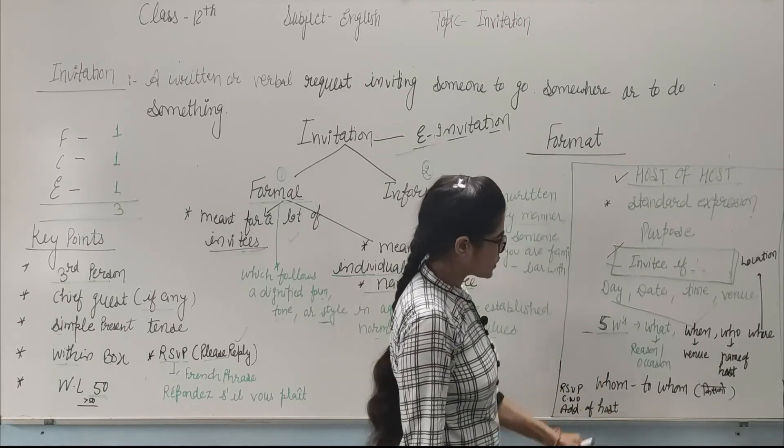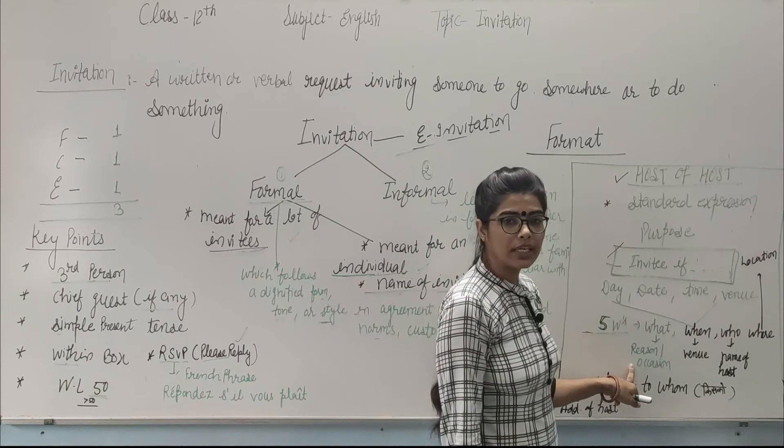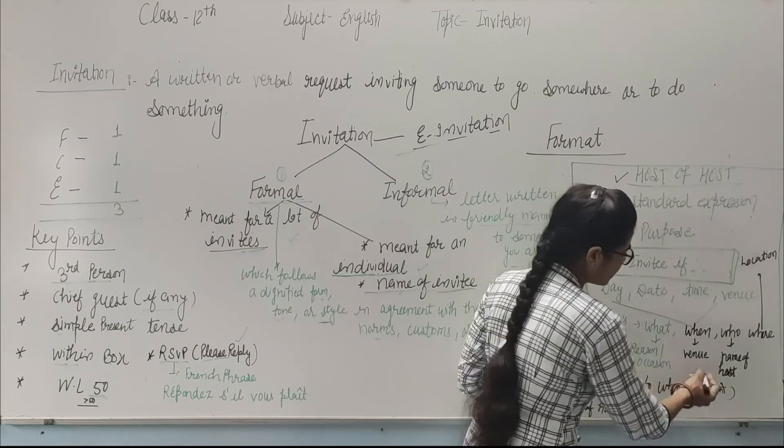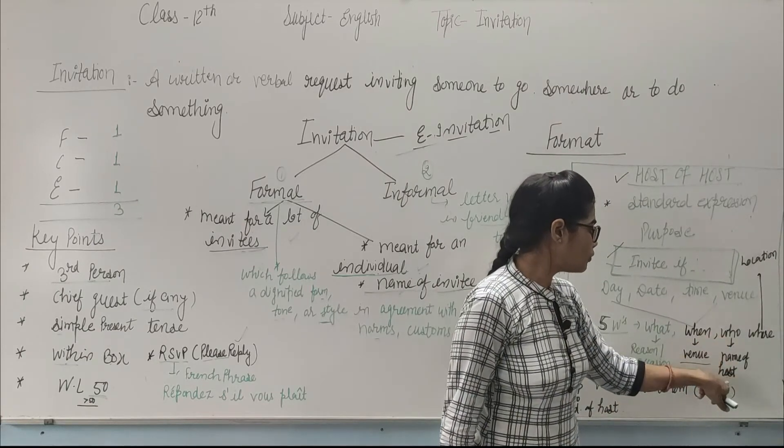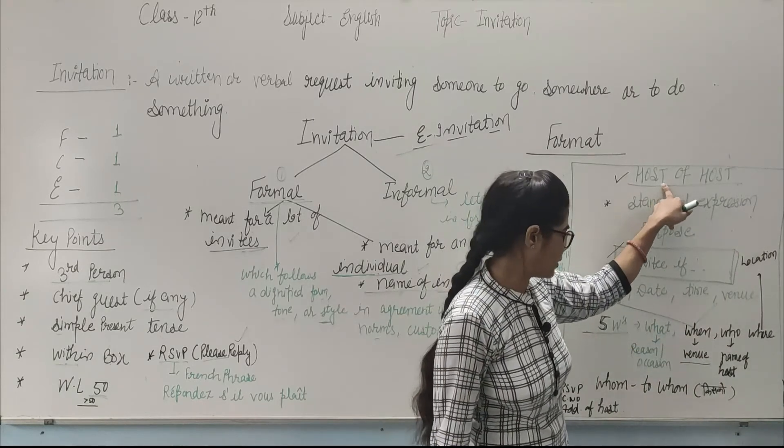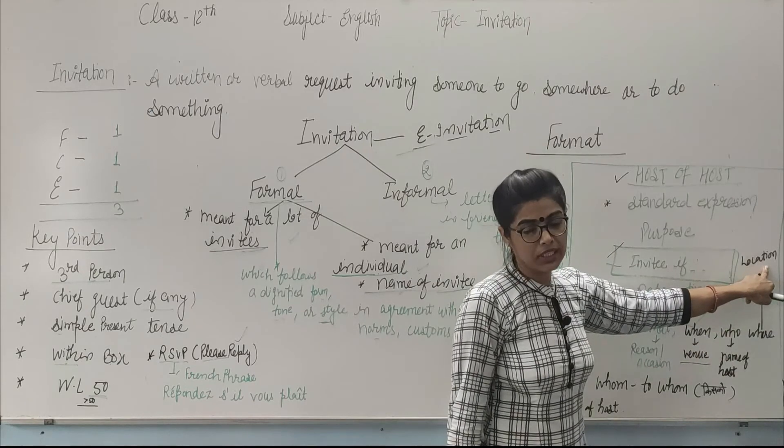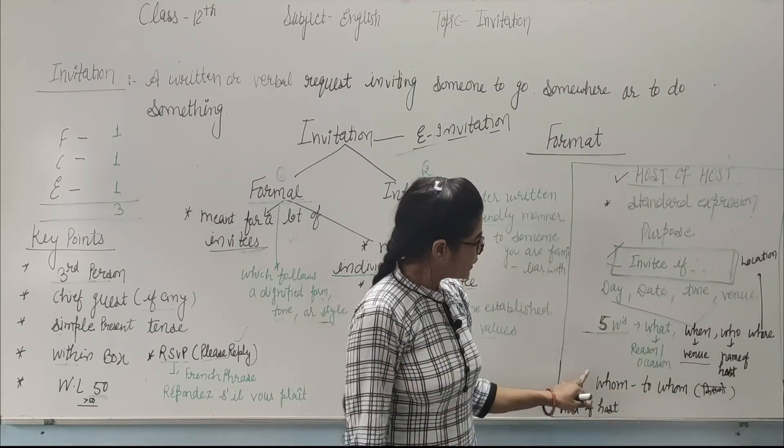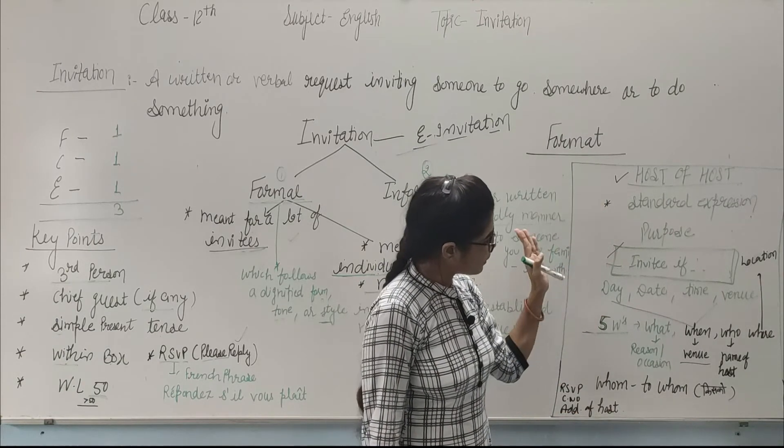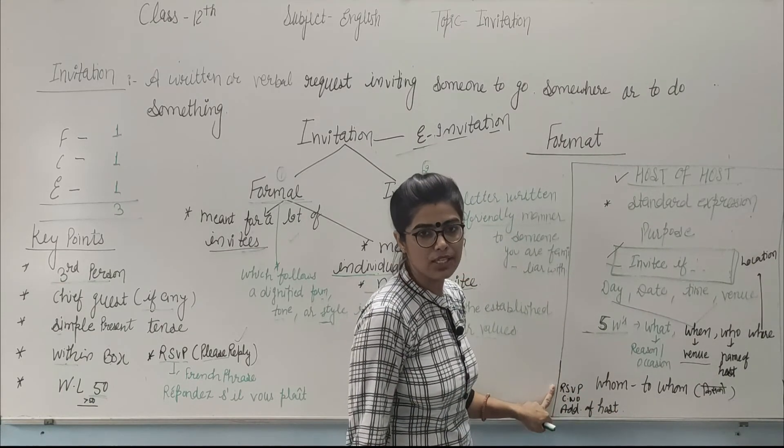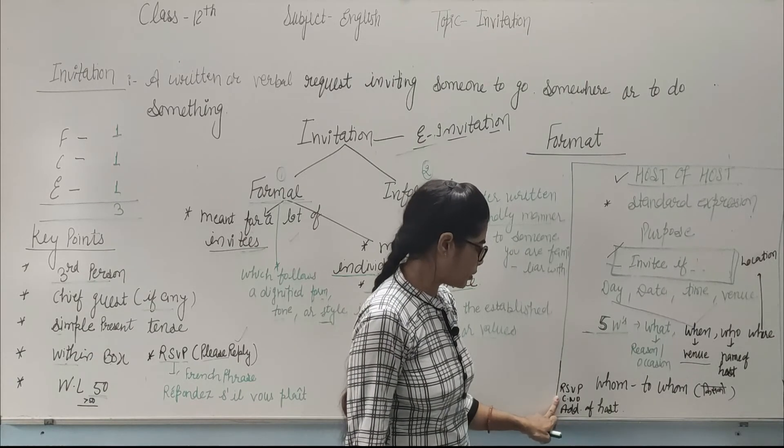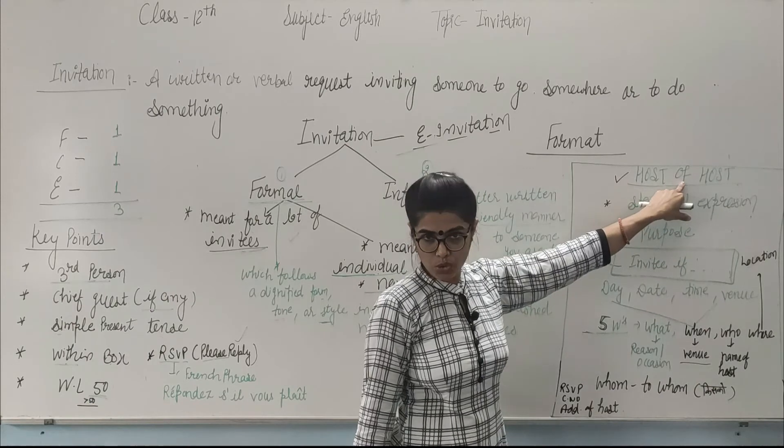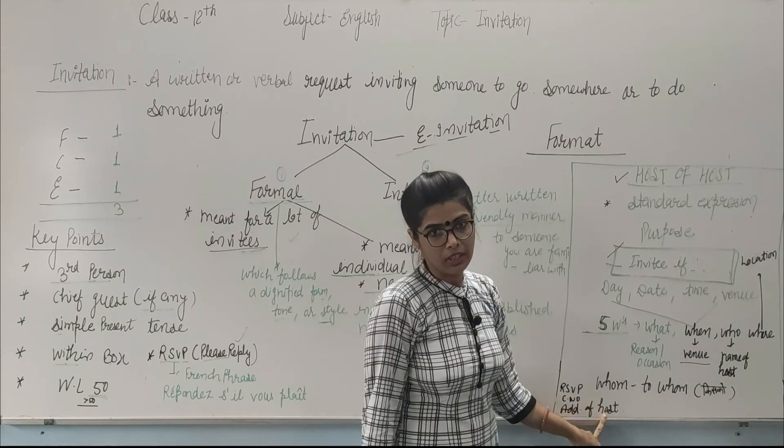What are these 5 Ws? First is 'what' - the reason or occasion, the purpose of invitation. Second is 'when' - the venue details. Third is 'who' - name of host, who is inviting. As I mentioned, the host comes here. Fourth is 'where' - the location. Last is 'whom' - to whom it is being written. These are the 5 Ws. On the left-hand side, write RSVP meaning 'please respond.' Here you give contact number, phone number, and address of host. For example, if Mr. and Mrs. Gupta are hosting their son's wedding, their contact number and address go here.